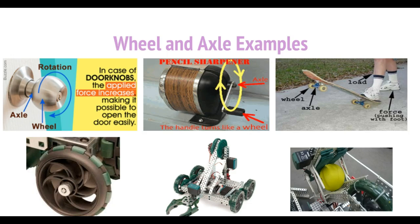Now let's look at some examples of this simple machine and how it makes things easier. Imagine if you had to open a door without a doorknob — you could push it, pull it, or lift it. But we're accustomed to using a doorknob, and the doorknob is actually a wheel and axle. The rotation of the doorknob turns and allows you to pull open the door with less force, making it much easier. The same principle applies to a pencil sharpener.